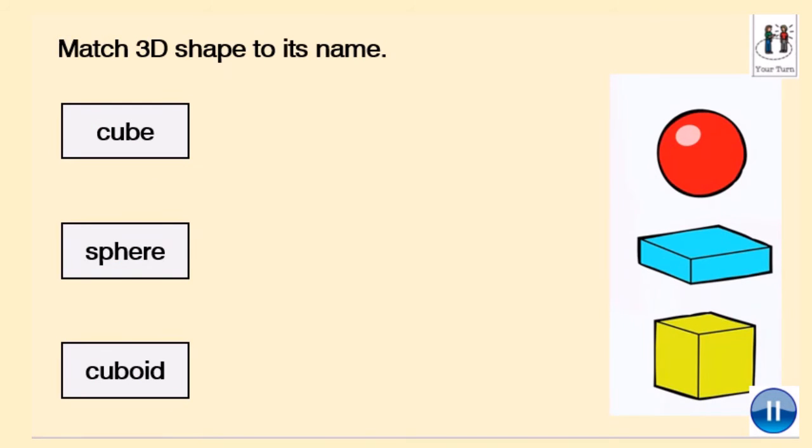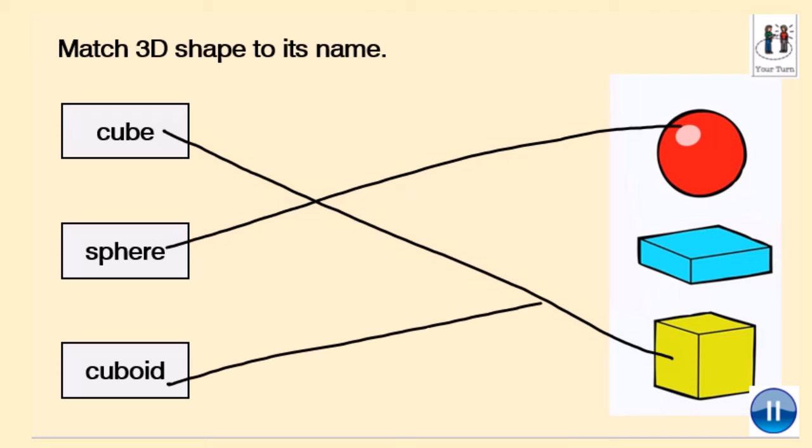You've listened to the properties. Now, we're going to match the 3D shape to its name. A cube. Which picture is a cube? A sphere. Which picture shows you a sphere? And which is a cuboid? Pause the video and write down your answers. Okay, here we are. It's marked the cube, a sphere, cuboid.